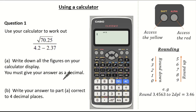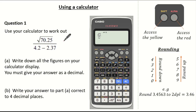So let's input it into our calculator. Firstly it's important to remember to make it look like the calculation itself. So let's press the fraction button first, then accessing the square root and entering 70.25.